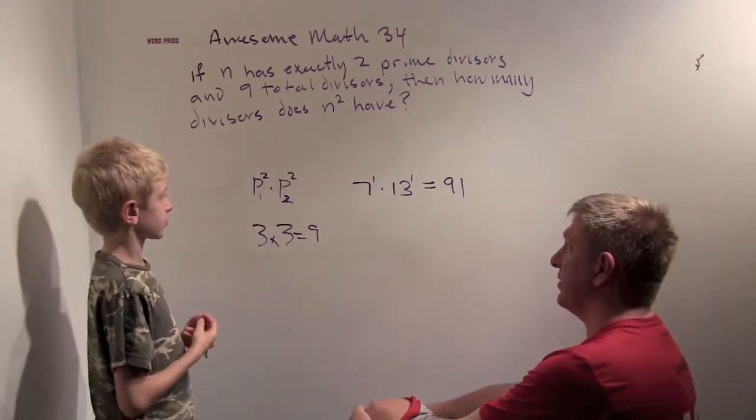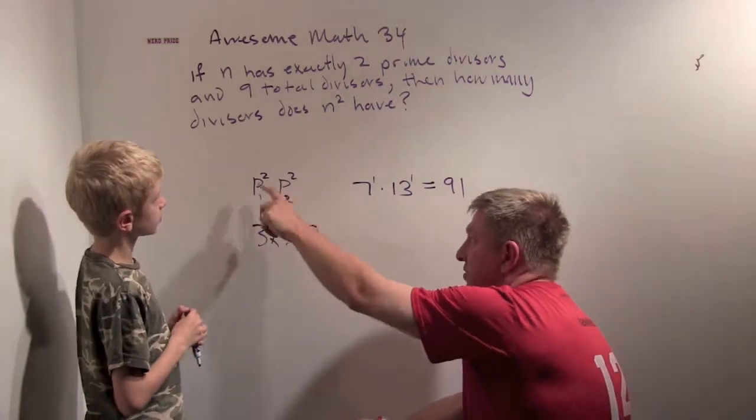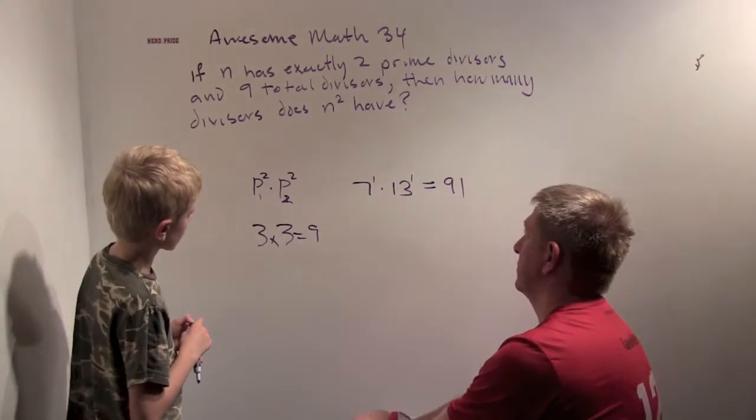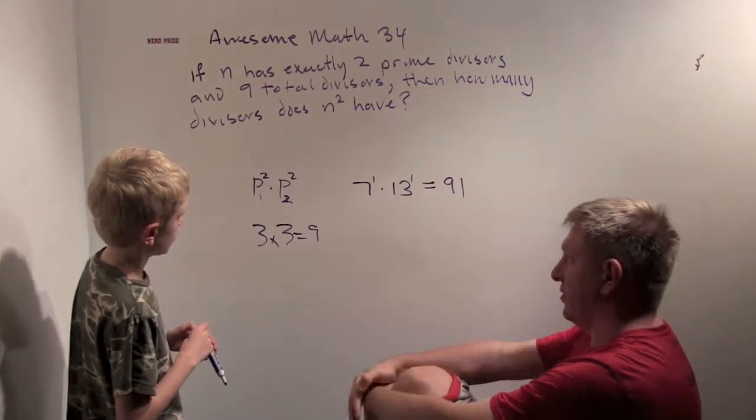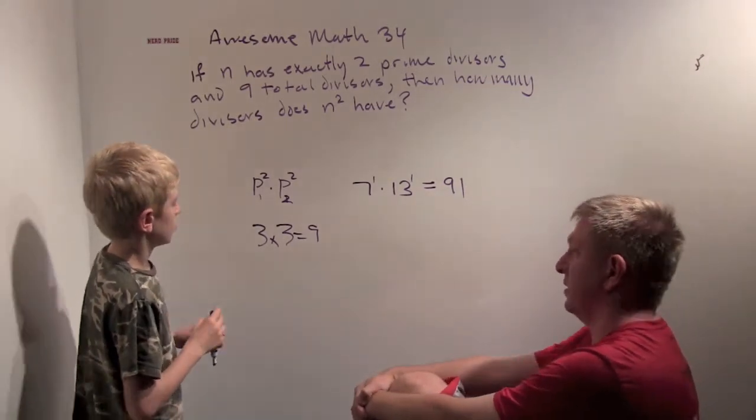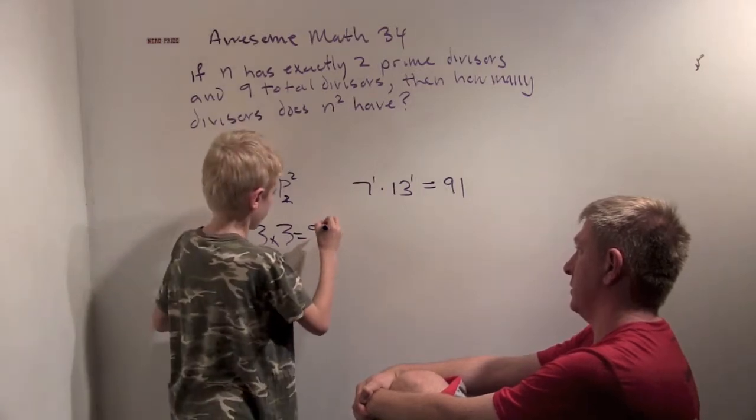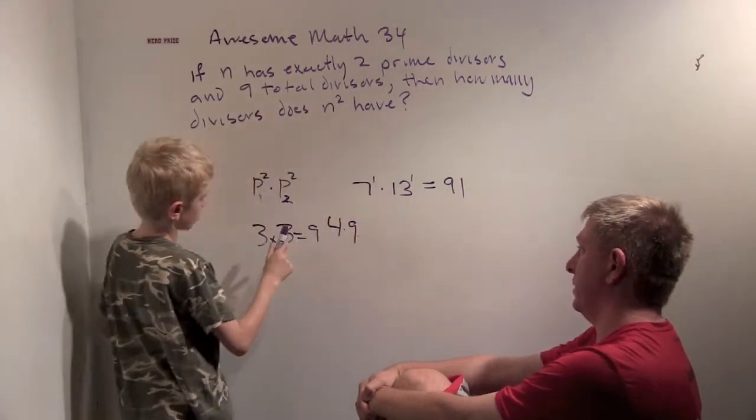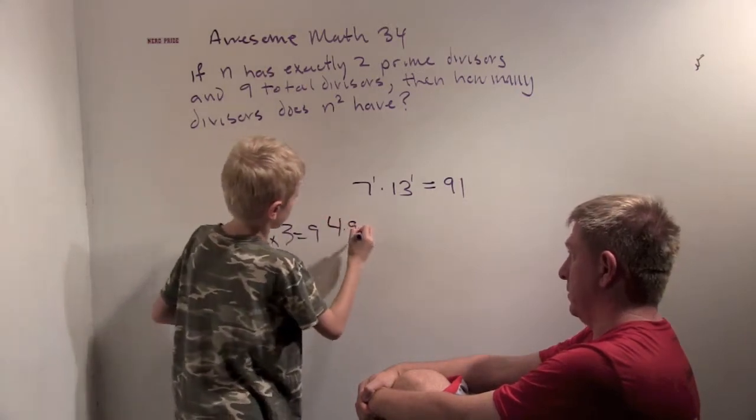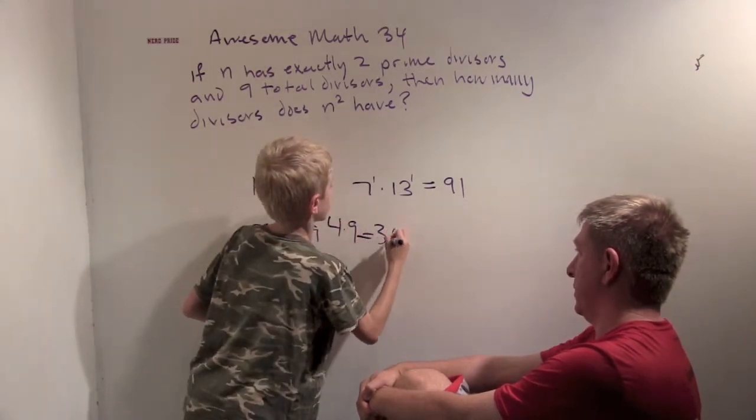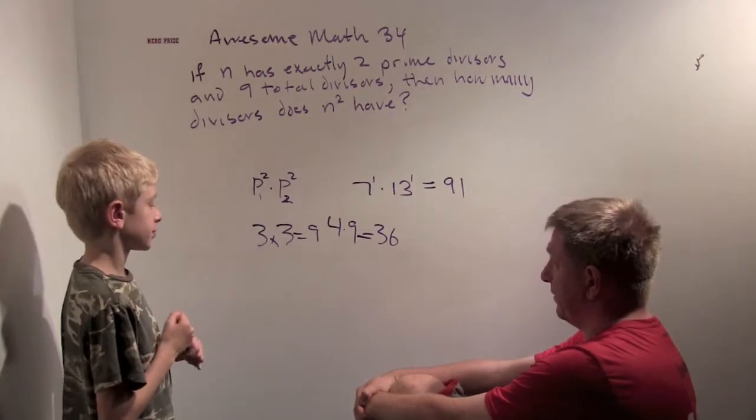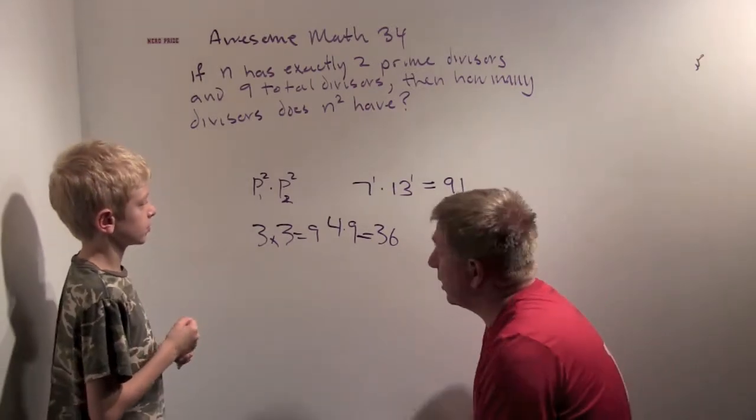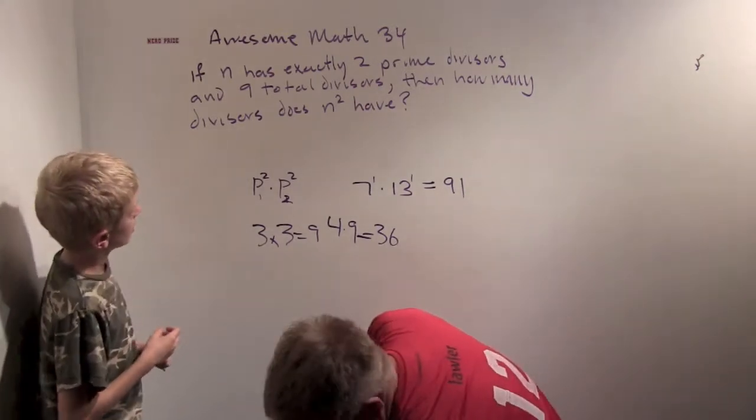Okay, so give me an example of a number that's going to look like prime squared times another prime squared. Just like I gave you 7 times 13. Well, we have 4 times 9. It's 2 squared times 3 squared. It's 36. Very good.